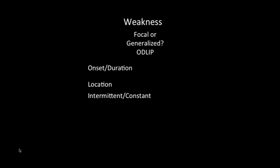Next, ask the patient if the weakness is intermittent or constant. Some central or peripheral nervous system problems cause weakness off and on — at times the patient is okay, other times not. For example, myasthenia gravis and multiple sclerosis patients can have intermittent weakness. In many peripheral neuropathies and central nervous lesions, the weakness is going to be constant.